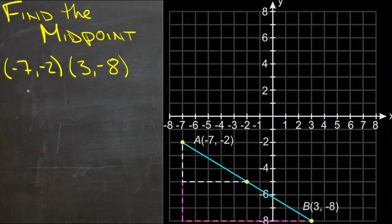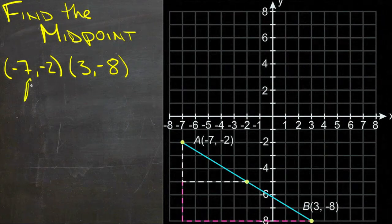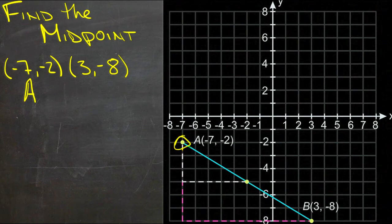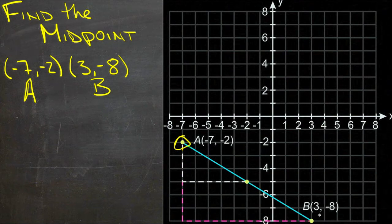Our first point is (-7, -2), so this is point A, and that's right here. And then this other one is point B, (3, -8), and it's down over here.